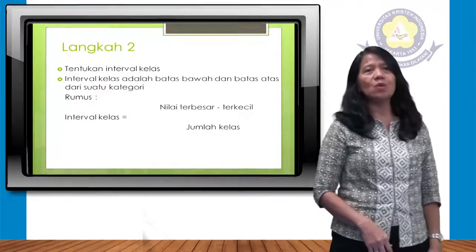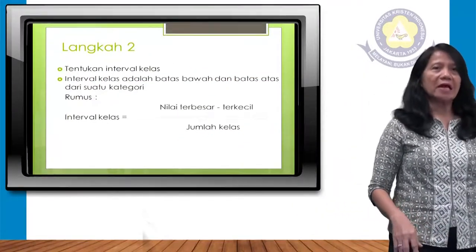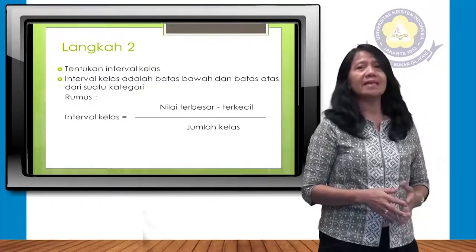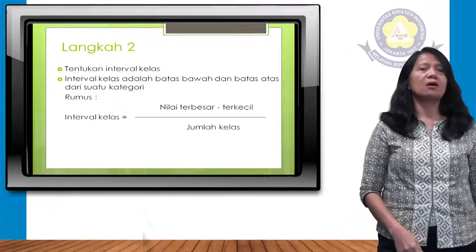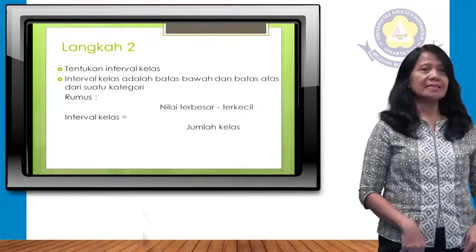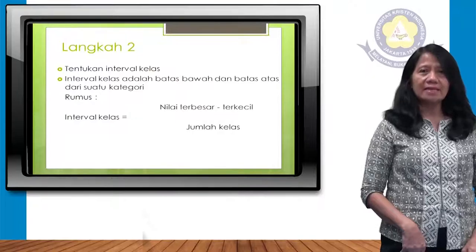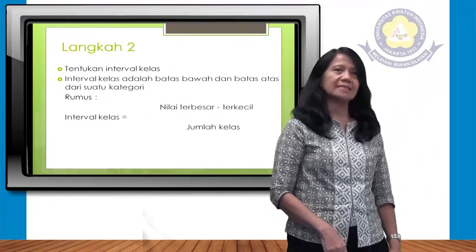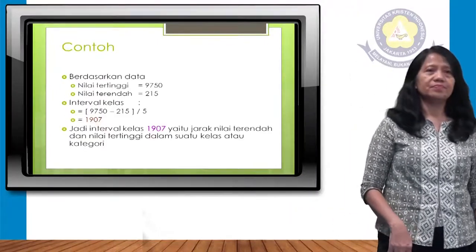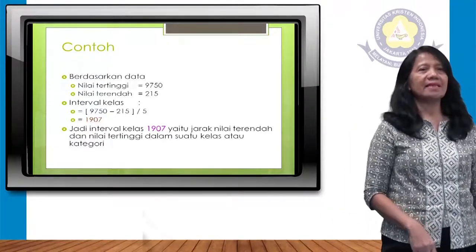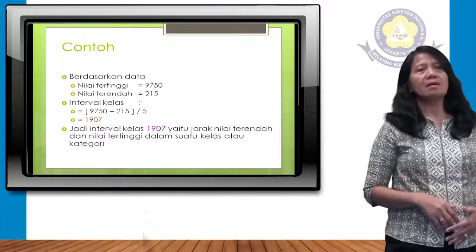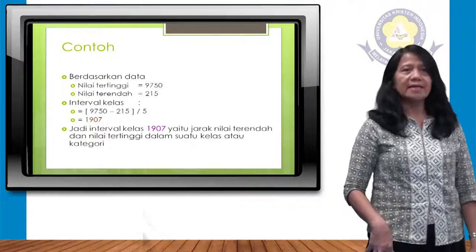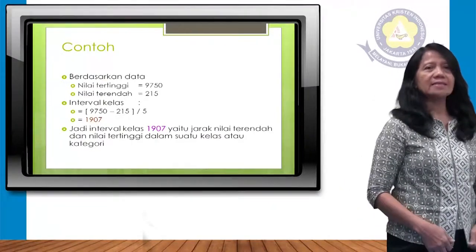Langkah kedua: tentukan interval kelas. Interval kelas adalah batas bawah dan batas atas dari suatu kategori. Rumusnya: interval kelas = (nilai terbesar − nilai terkecil) ÷ jumlah kelas. Berdasarkan data perusahaan saham tadi, nilai tertinggi adalah 9.750 dan nilai terendah adalah 215.